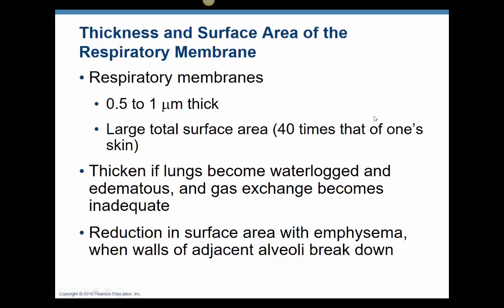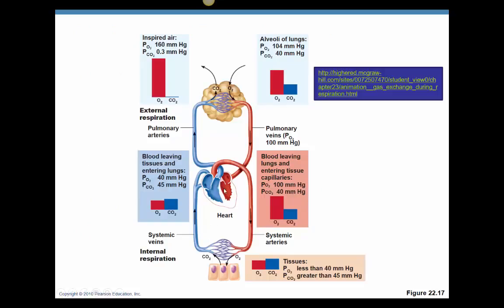Looking at the respiratory membrane: if that membrane becomes filled with water because of pneumonia, or excess fluid because of heart failure — that's where the term edematous comes from, meaning fluid around the lungs — gas exchange is going to be impaired. We'll start to see an increase in the PCO2 in the vessels because CO2 cannot cross into the alveoli. Anytime there's something wrong with the heart and its pumping action, too much blood remains in the vessels, fluid leaks out around the outside of the lung, and that prevents the respiratory membrane from effectively moving CO2 from the blood into the alveoli to be exhaled.